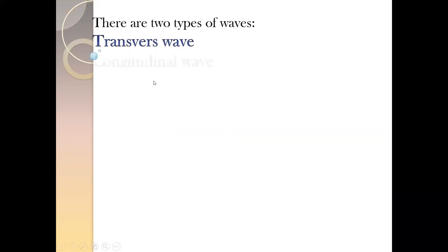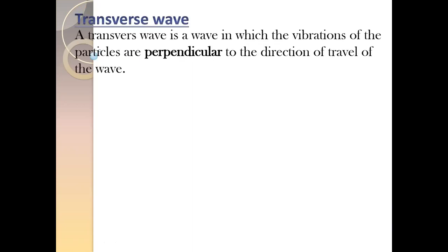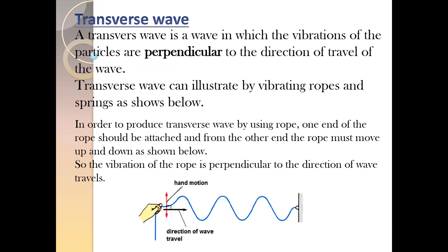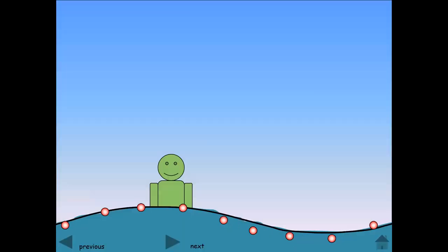So a wave is simply a mode or way of energy transfer. There are two main types of waves: one is called a transverse wave, and another is longitudinal. In a transverse wave, the vibration of the particle is perpendicular to the direction of the wave.